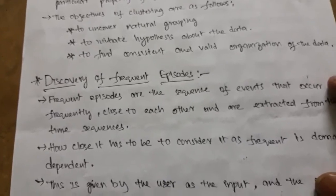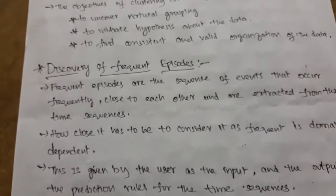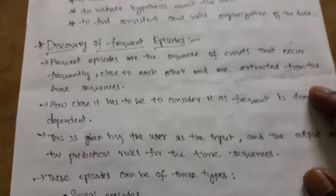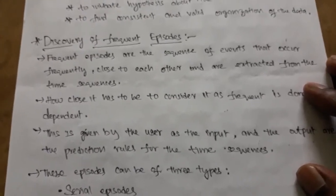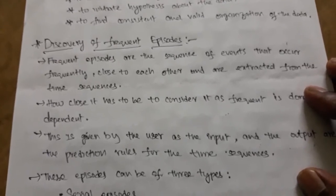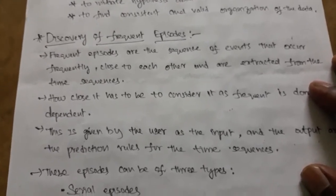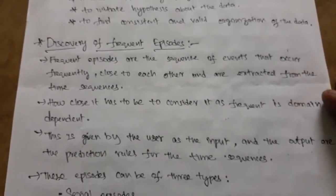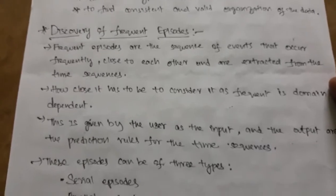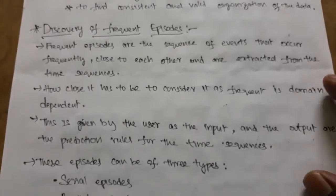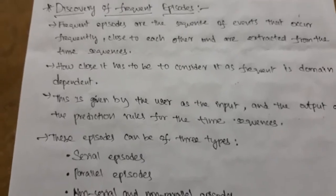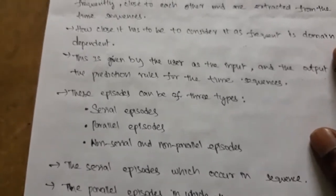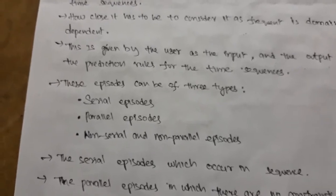Discovery of frequent episodes: frequently repeated items are considered in one area. Frequent episodes are sequences of events that occur frequently, close to each other, and extracted from a time sequence. How close they need to be is domain dependent and is given by the user. The input and output are prediction rules for the time sequence. Different types of episodes include serial episodes, parallel episodes, and non-serial and non-parallel episodes.